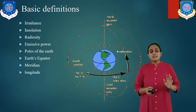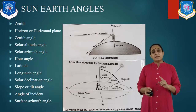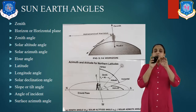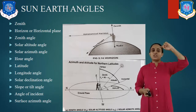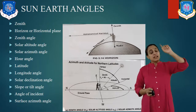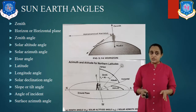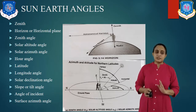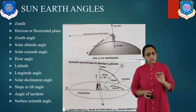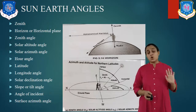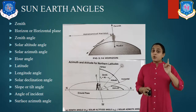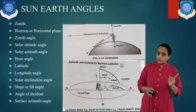What is the zenith? It is an imaginary point directly above a particular location on an imaginary celestial sphere. If you are standing on the Earth and consider your vertical upward direction, that is known as the zenith — above, in the vertical direction opposite to the apparent gravitational force at that location. Above, opposite to the gravitational direction, is known as zenith.